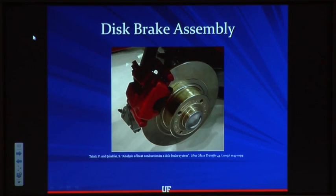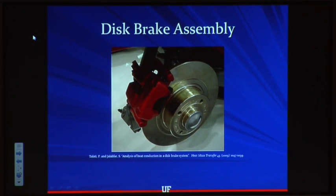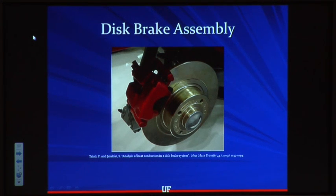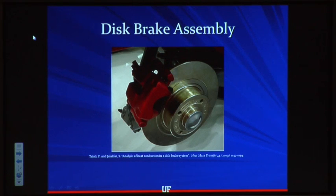Let's quickly talk about a disc brake assembly. What we have here is a rotating disc that is connected to the axle and is passing through an open pair of calipers, shown here in red. These calipers are outfitted with brake pads, usually some kind of a rigid molded asbestos material. When the driver presses down on the brake pedal, the calipers are actuated and the pads are pressed up against the rotating disc, clamping down on that disc, which slows the rotation via friction.